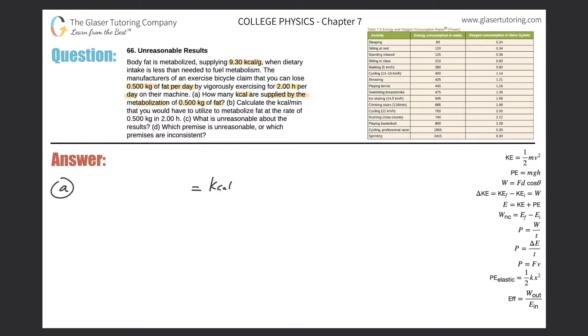They tell us that body fat supplies 9.30 kilocalories per one gram. We want to know how many kilocalories are supplied by 0.5 kilograms. Right here I have kilocalories per gram, but I want to know it per half a kilogram, so I need to convert this gram into kilogram first. This is going to be multiplied by 1000 grams per one kilogram, so the grams cancel.